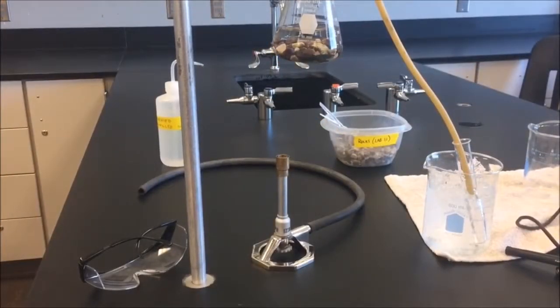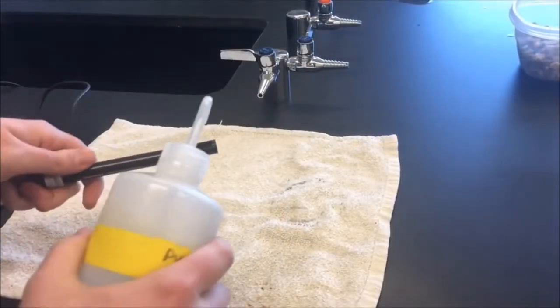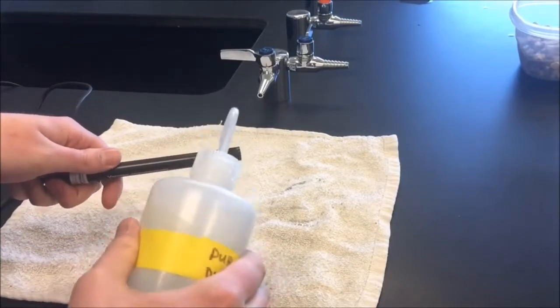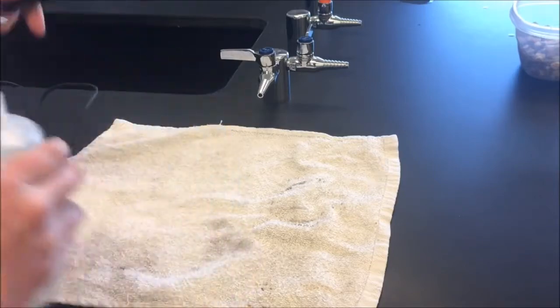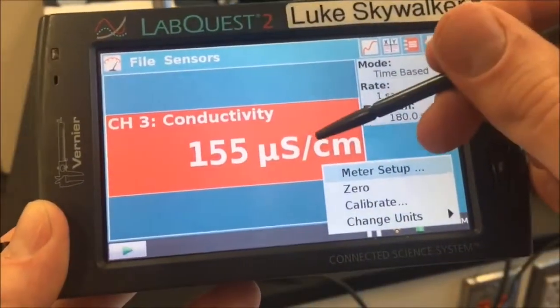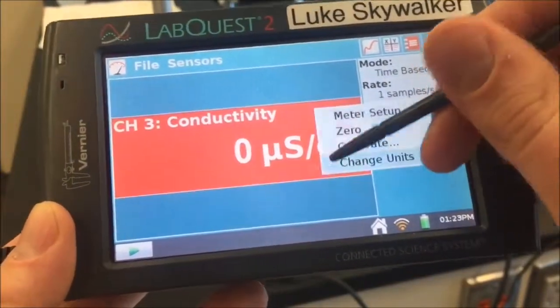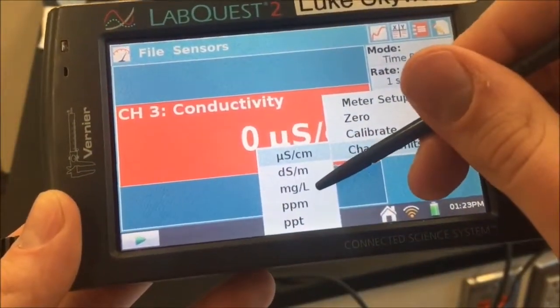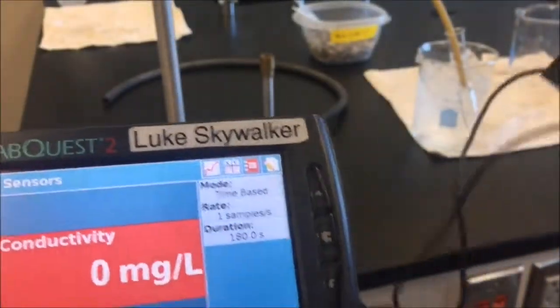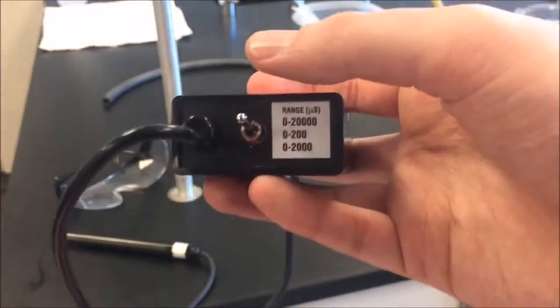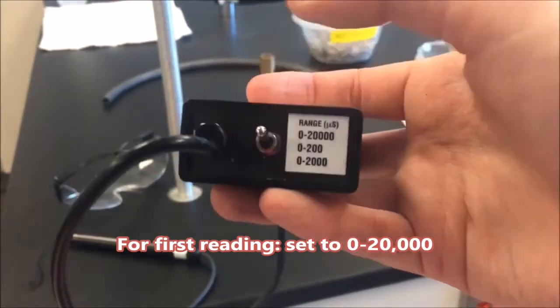Before we run the procedure, the first thing we need to do is measure how much salt is actually in the water. So what we're going to do first is plug our conductivity probe into the LabQuest device. Spray off your conductivity probe with distilled water. Before we take our measurement, we're going to make sure to change our units to milligrams per liter. And on the conductivity sensor, we want to make sure that we have it set to 0 to 20,000 initially.